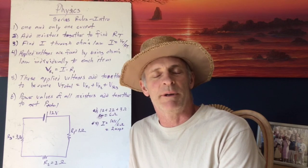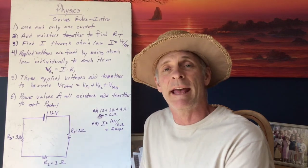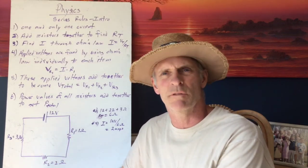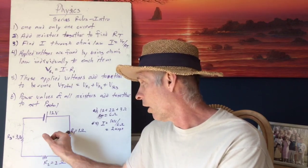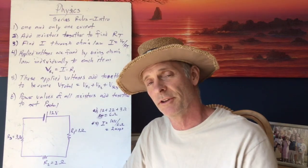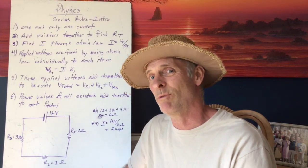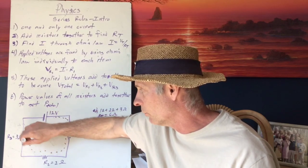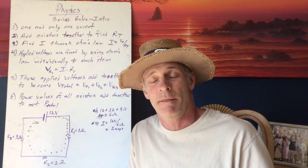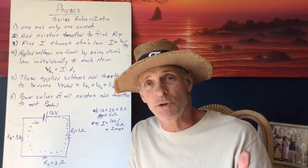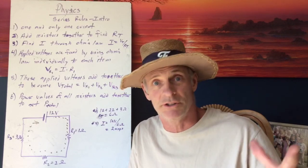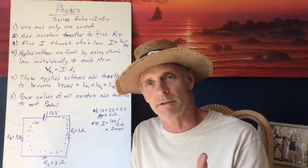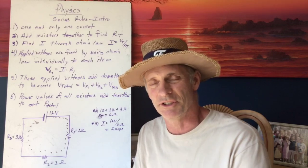We're at the magic board, evaluating a simple series circuit. I have a series circuit drawn with three resistors and a 12-volt battery supply. R1, R2, and R3. The first thing to notice is that there's only one path for the current to travel — one complete loop with no offshoot branches. If current goes through R1, it must go through R2 and R3. That is the definition of a series circuit.